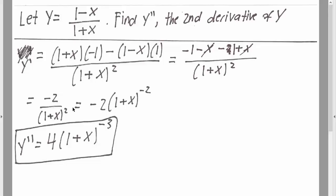And now we make it in an easier form to work with, so we have negative 2 times parentheses 1 plus x to the negative 2. And now we simply take the derivative one more time for the second derivative.